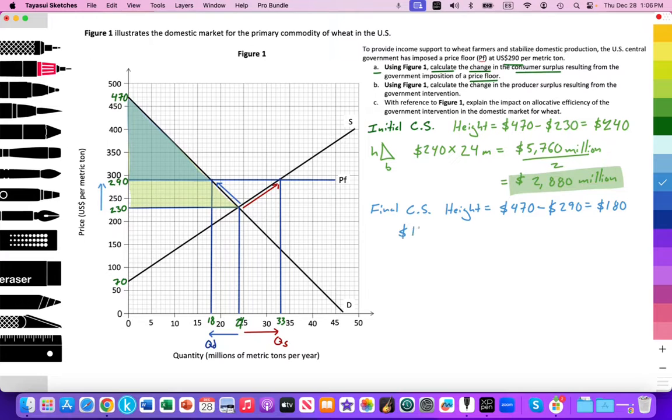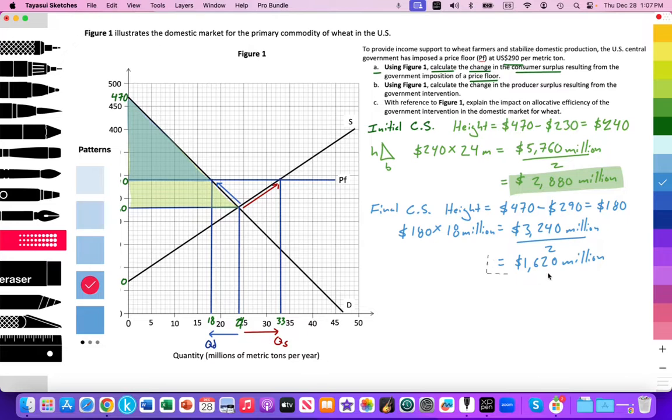So I'm going to multiply 180 times the base. And the base has now been reduced to 18. So here we have 18 million. So 180 times 18 million is 3,240 million. Divide by 2 because it's a triangle. And so that's going to equal 1,620 million. And so let's highlight that area.